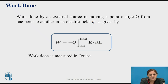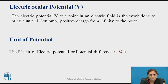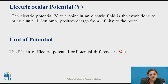Work done is measured in joules. Now, the next topic is electric scalar potential. It is denoted with the letter V. The electric potential V at a point in an electric field is the work done to bring a unit positive charge from infinity to that point. That is, work done per unit charge is nothing but the electric potential. The unit of potential is the volt. It is also known as the potential difference.